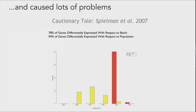Here's a great example of that problem. A paper came out where they looked for differential expression between two ethnic groups — they took Japanese and Chinese samples and looked for differential expression compared to European samples from the CEPH pedigree. They found lots of genes differentially expressed with respect to population. But when you plotted when the samples were taken, most of the Asian samples were taken later than the European samples, so the differences were largely due to batch and not due to population — the actual biological question.